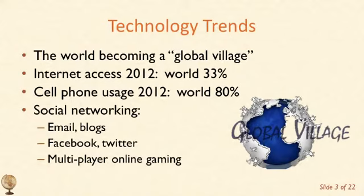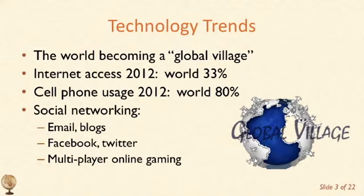In Western Europe, Internet access is over 60%. In African countries, it's typically in the single digits. Cell phone usage is much more widespread — in a lot of countries it's near 100%. That's the case in Western Europe and the United States. Even in countries where Internet access is not as widespread, like African countries and India, you have widespread cell phone usage. One difficulty in providing Internet access is the lack of infrastructure in developing countries.